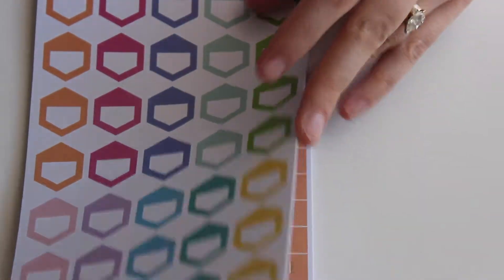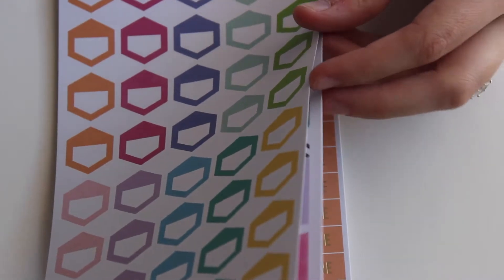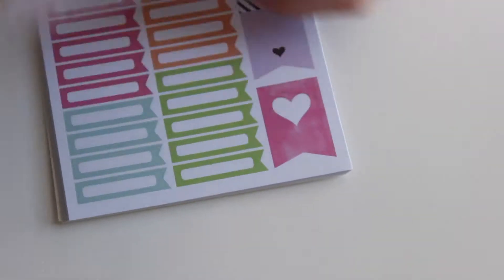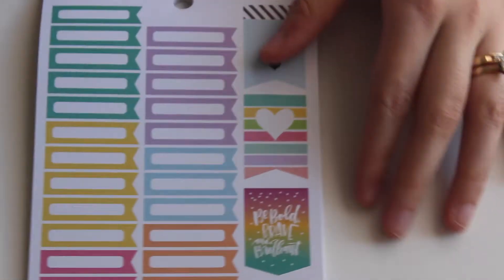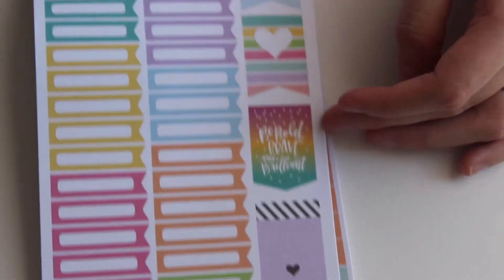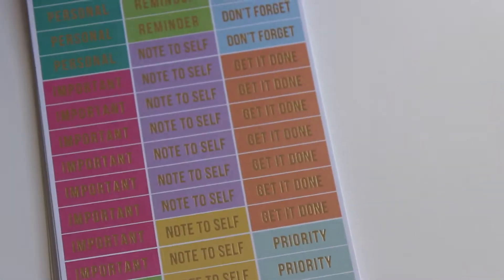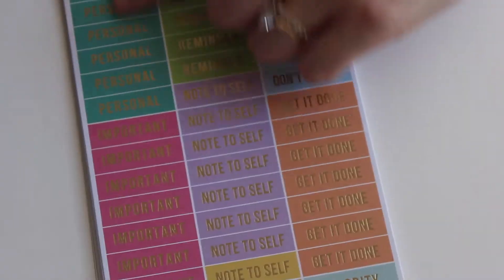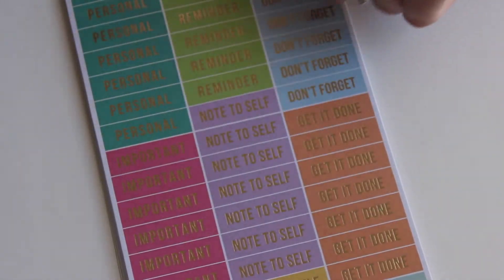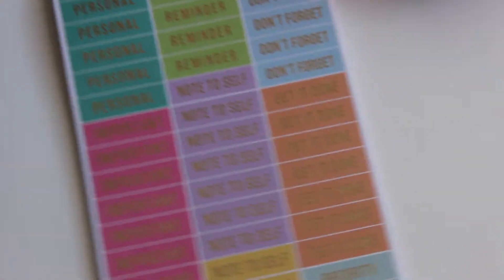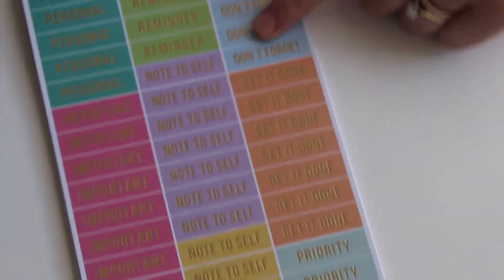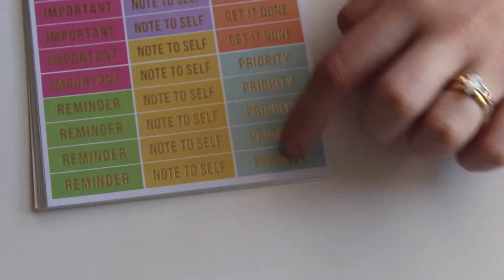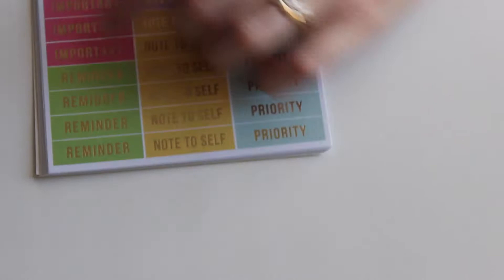And these are the hexagon stickers. More little arrow stickers. And these, I don't know if you guys can see it with the gold foil. But the top one here says personal, this one says reminder, don't forget, note to self, important, get it done, priority, more note to self, and reminder.